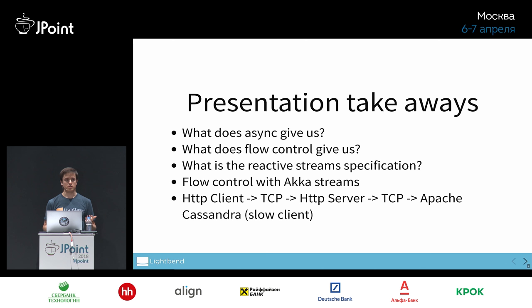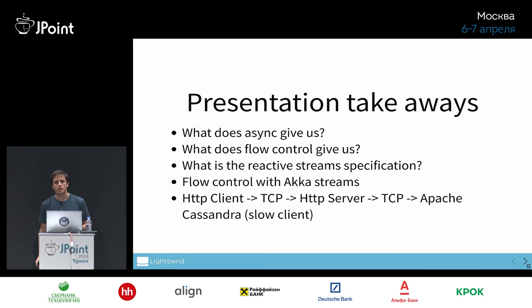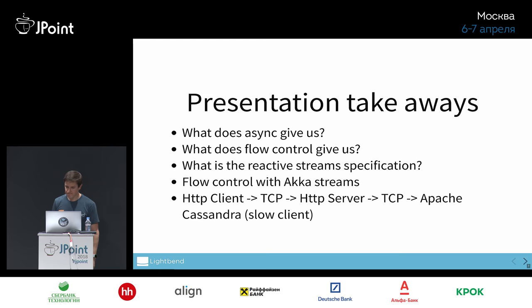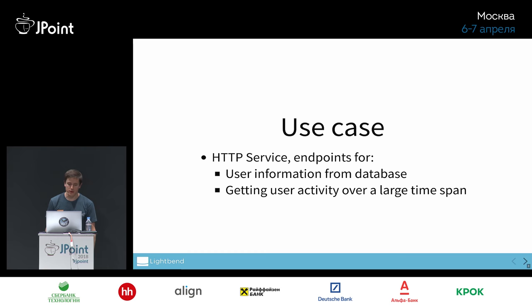If the HTTP client overloads or slows down, I want everything to slow down — I don't want to pull things from the database into the HTTP server if the client isn't reading them quickly enough from the other side of the socket. We'll use Wireshark to look at the network. The use case has two endpoints with different characteristics. The first is getting a small bit of data — no more than about 10 kilobytes — some user information from a database over HTTP.